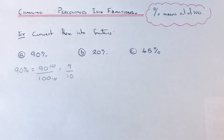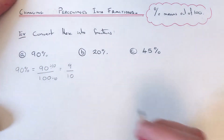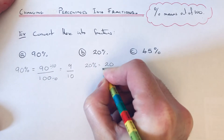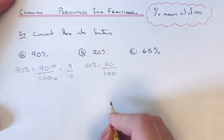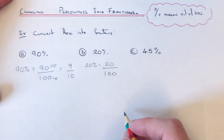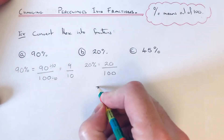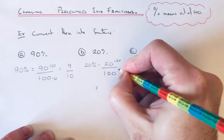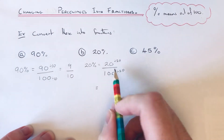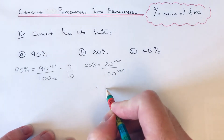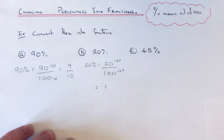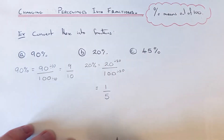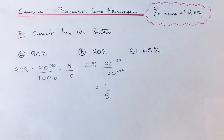Let's move on to the second example. This time we've got 20%. So 20% means 20 out of 100. Again we just need to simplify this fraction. The biggest number 20 and 100 can be divided by is 20. So 20 divided by 20 is 1, and 100 divided by 20 is 5. So 20% is the same as 1 fifth.